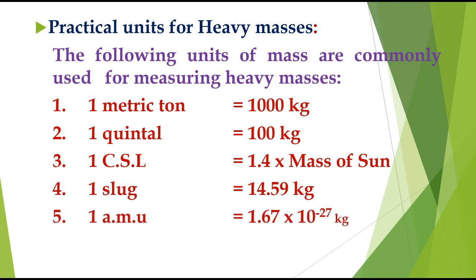One slug is equal to 14.59 kilograms. One AMU — atomic mass unit — is defined as one-twelfth of the mass of a carbon atom. Its value is 1.67 × 10⁻²⁷ kilograms.